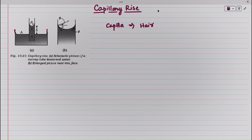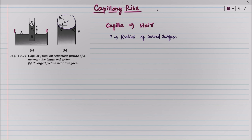We can see that this is a curved surface — it is a part of a circle having radius R. Here, R is the radius of the curved surface of water. And the small 'a' is the radius of the capillary tube.